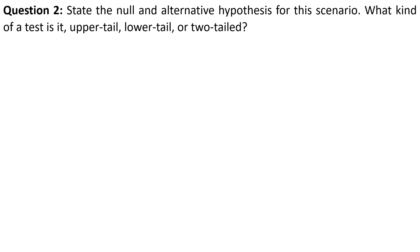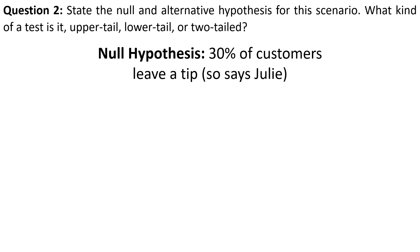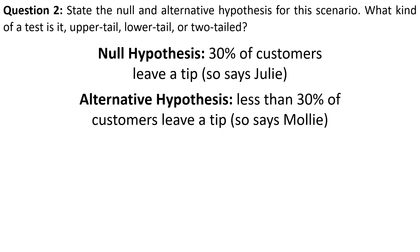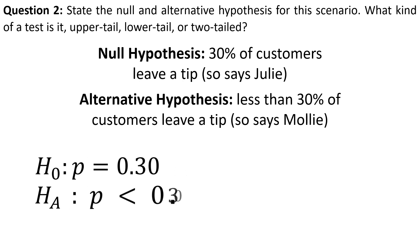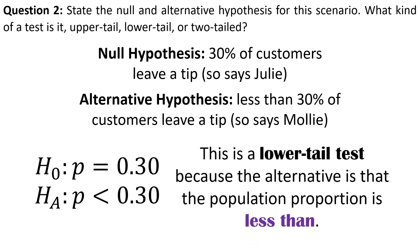Next, we're going to state the hypotheses and say whether it's an upper-tailed, lower-tailed, or two-tailed test. The null hypothesis is that 30% of customers leave a tip. The alternative is that this number is something less than 30%. This will be a lower-tailed test because the alternative is that the population proportion is less than 0.30. When we draw our diagram, we're going to be working in the lower tail of the normal distribution.